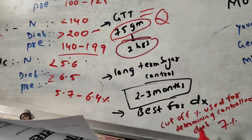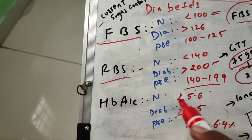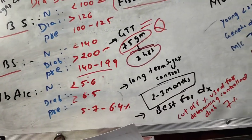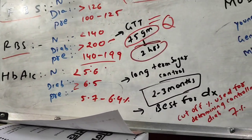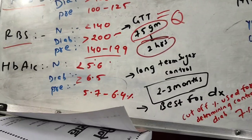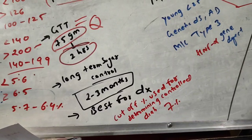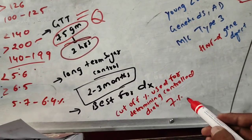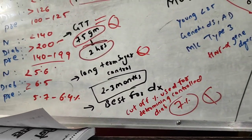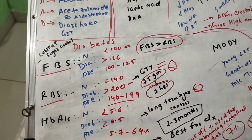HbA1c tells us about the past two to three months of glucose levels, making it best for long-term sugar control and also for diagnosis. For current sugar control, use FBS. The cutoff percentage used for determining controlled diabetes is 7% — this is also a common exam question.